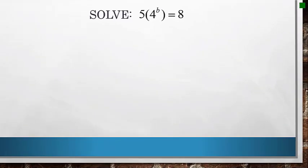Let's look at this problem. Very similar, except we don't have this exponential piece isolated. So to get this piece by itself, the 4 to the b power, we need to get rid of that 5. Right now it's getting multiplied, so the opposite of multiplying is dividing. That leaves me with 4 to the b power equals 8 over 5.